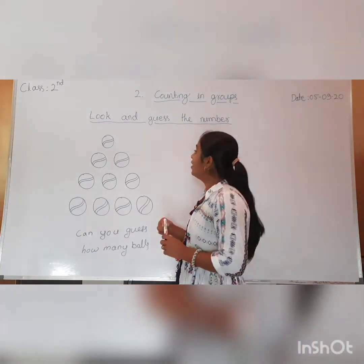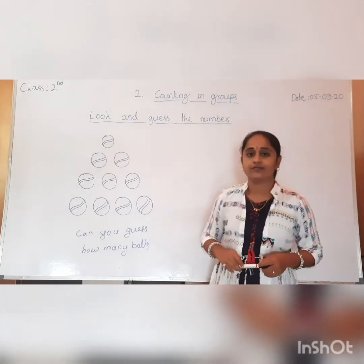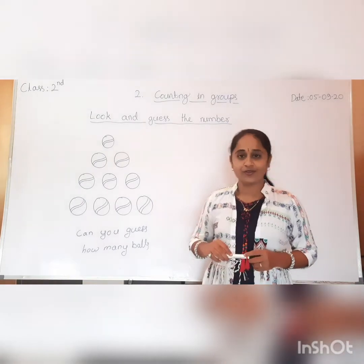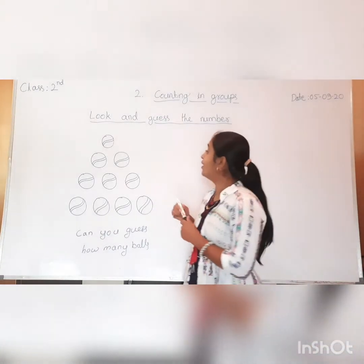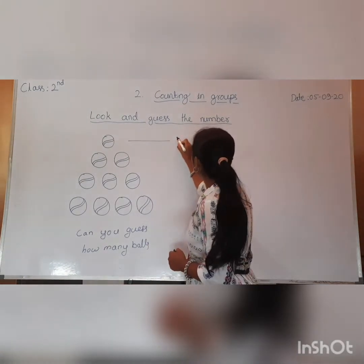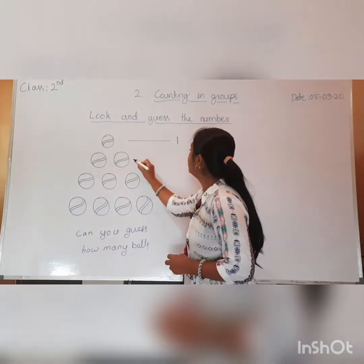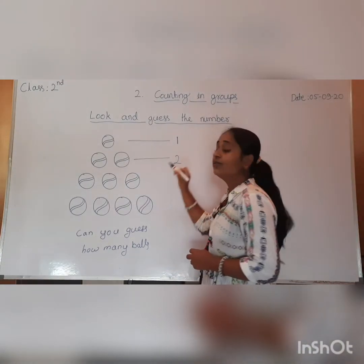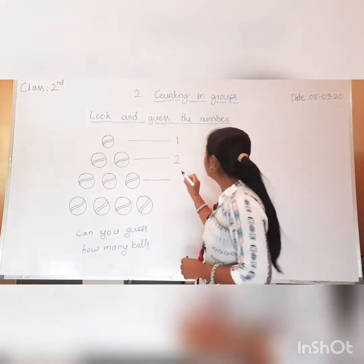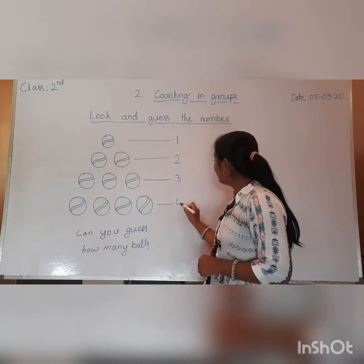Let's start. In the first row, how many balls are there? In the first row, only one ball is there. In the second row, how many balls are there? In the second row, we have two balls. In the third row, we have three balls. In the fourth row, we have four balls.